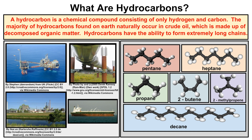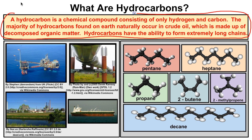Before we start naming and writing the chemical formulas for hydrocarbons, we should first talk about what hydrocarbons are. A hydrocarbon is a chemical compound consisting of only hydrogen and carbon. The majority of hydrocarbons found on Earth naturally occur in crude oil, which is made up of decomposed organic matter. There are millions of different hydrocarbons, and in fact when you further your education in chemistry, you might take organic chemistry, which deals a lot with hydrocarbons.